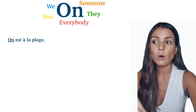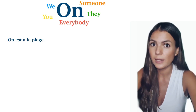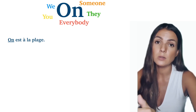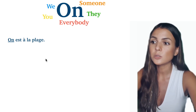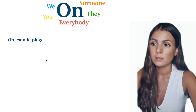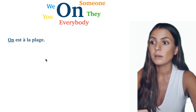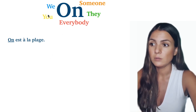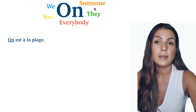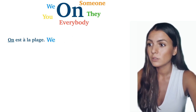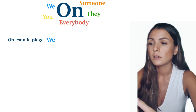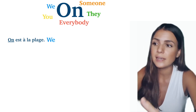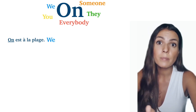It will depend on the situation — 'on' can have different meanings. So let's start with the first one. Imagine in general, if I say 'on est à la plage', what do I mean? Usually it will mean 'we', like if you call me and ask where I am, and I say 'on est à la plage' — meaning 'nous sommes à la plage', we are at the beach.